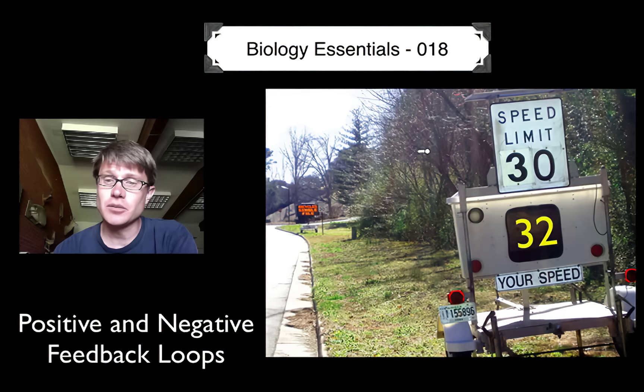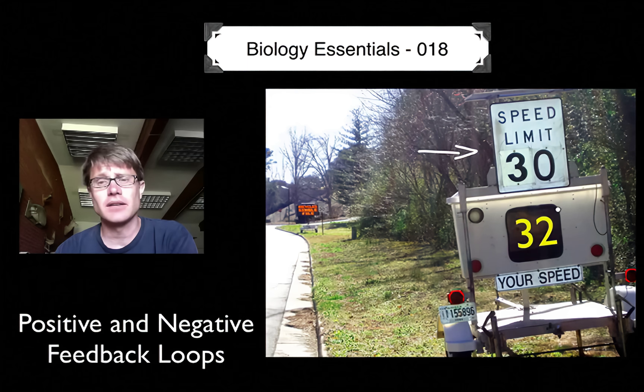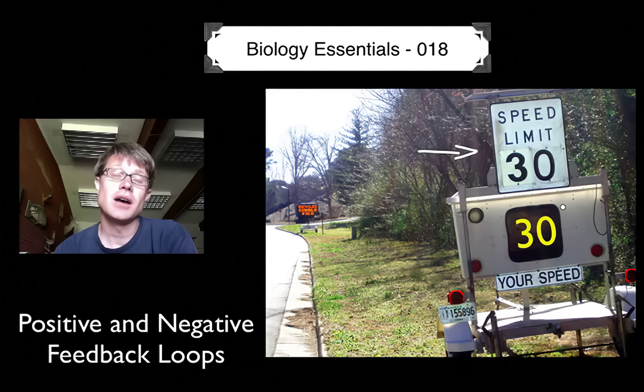If you've ever driven you've probably seen a sign like this. This is a guilt sign. They put the speed limit up here and then show how fast you're going down at the bottom. You constantly get feedback as far as your speed goes. You'll see you're going a little fast so you'll slow down. But then you'll realize you're slowing down way too much, so you'll speed up. If it works out well you'll hit that speed limit, or that target set point.